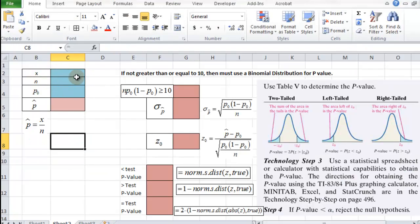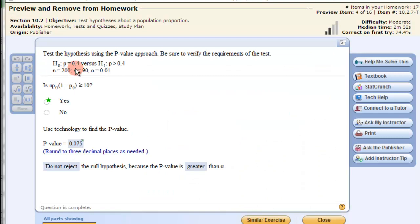The blues are the boxes we'll be entering values in, and the red boxes are the calculation boxes. So let's get our x, n, and p-naught. Our x is 90, 200, and then our p-naught is this value right here, the 0.4. So 90, 200, and 0.4.